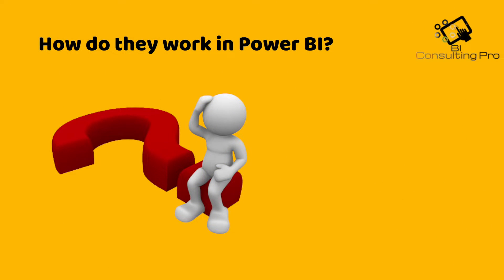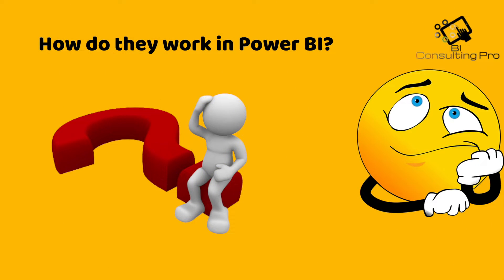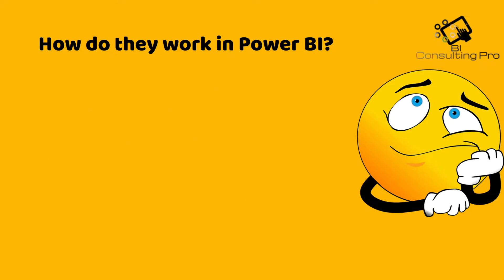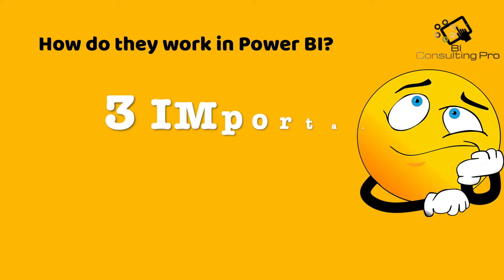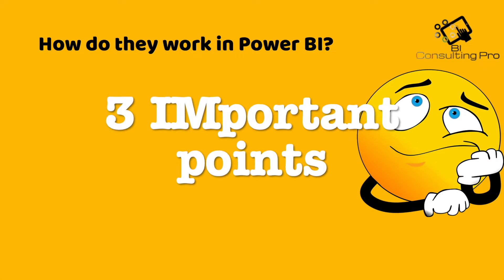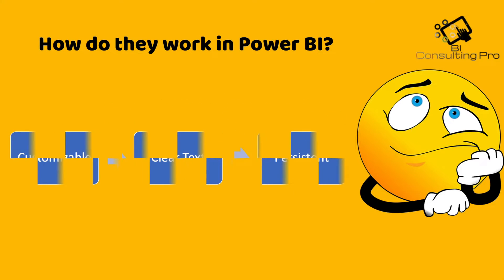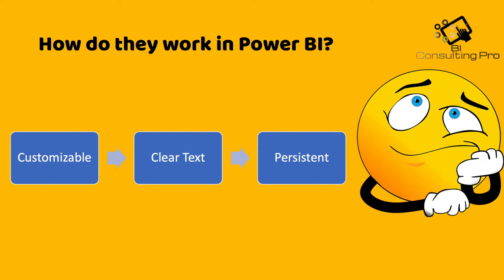How do sensitivity labels work in Power BI? There are three important points to consider: first is Customizable, second is Clear Text, and third is Persistent. Let's discuss them one by one.